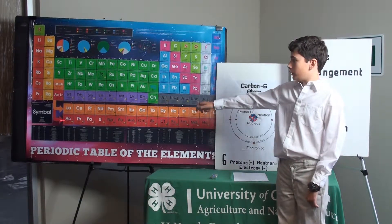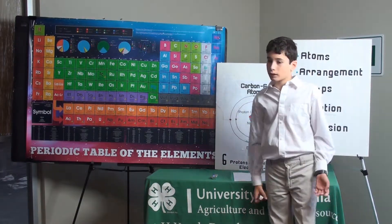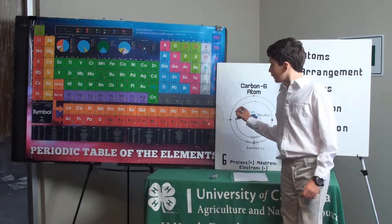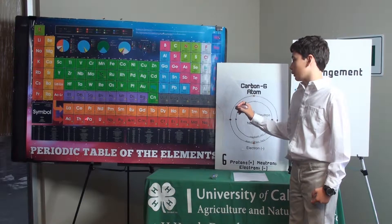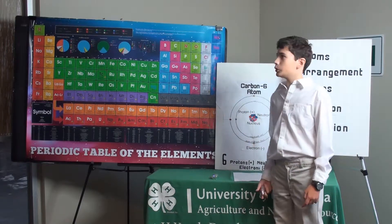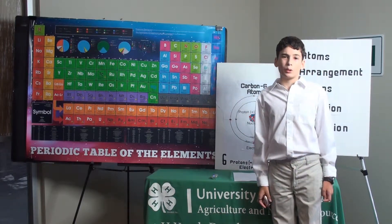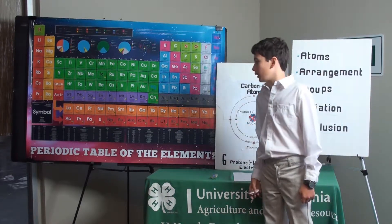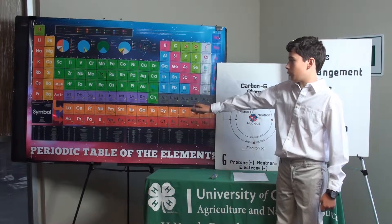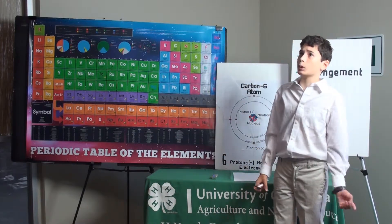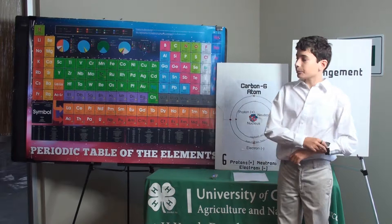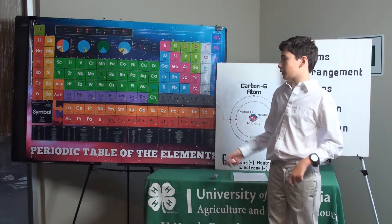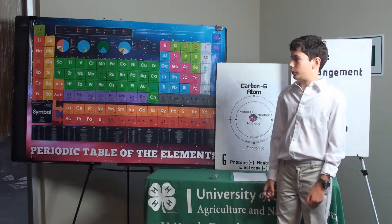This group down here is called the actinides. The actinides are all radioactive — we'll go over what radioactive means in a bit. These all have different purposes, but most of them are too radioactive to have any practical purpose. Many of them have only been discovered in labs and are all man-made, except for these four right here, which are naturally found. Uranium and plutonium are used in bombs, and actinium, thorium, and protactinium are all pretty rare, so most people haven't heard of these.